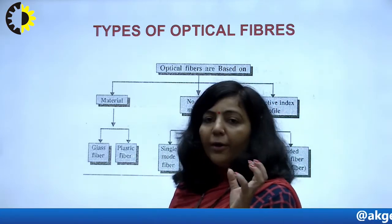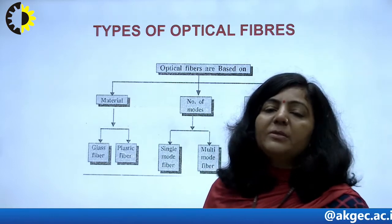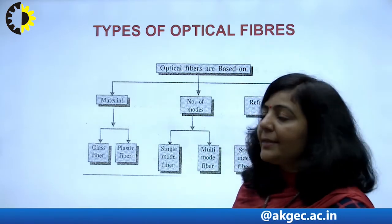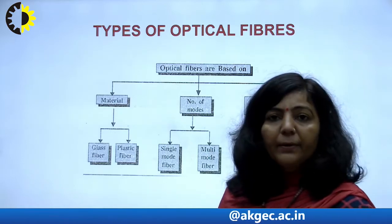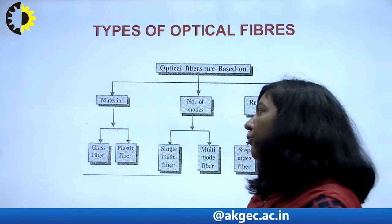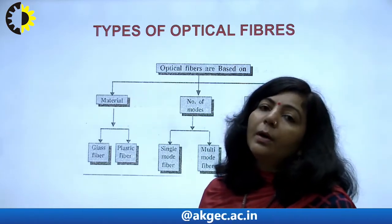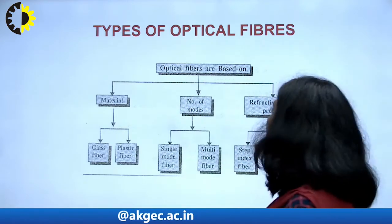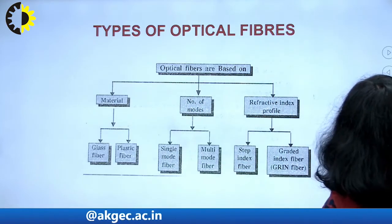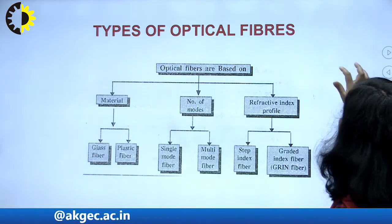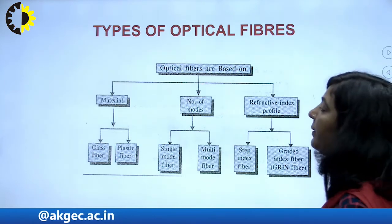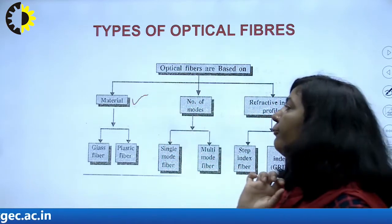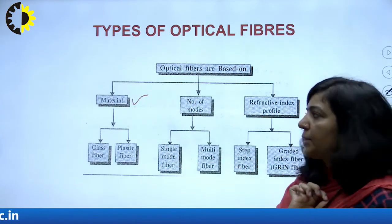If your optical fiber is made of glass then that type of fiber is known as a glass fiber, and if plastic is used to construct those optical fibers then those types of fibers are known as plastic fibers. So that is one criteria to classify optical fibers into different groups: glass fiber and plastic fiber.